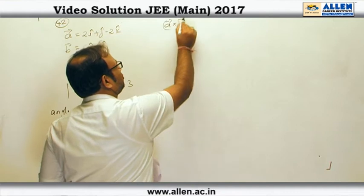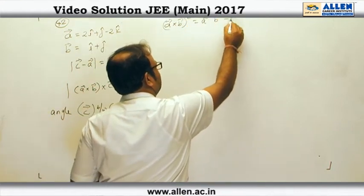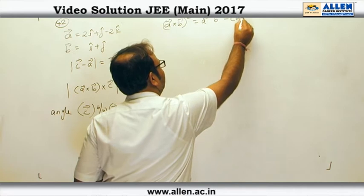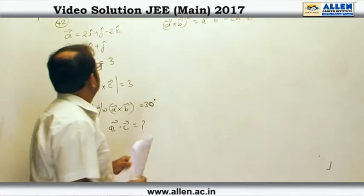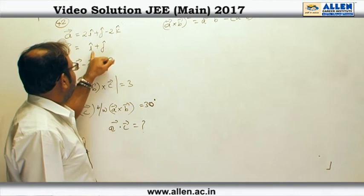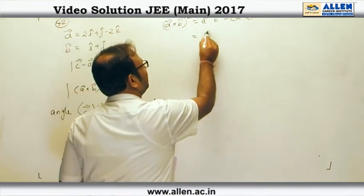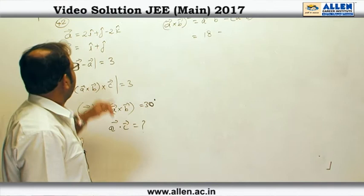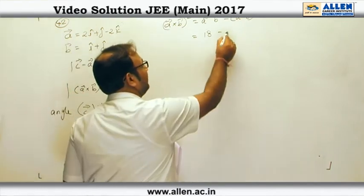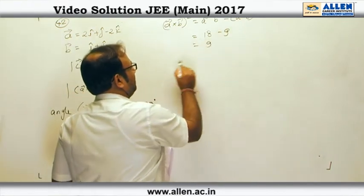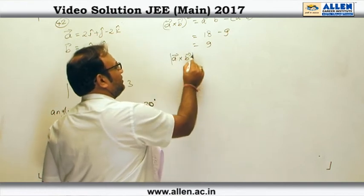Lagrange's identity states: |A×B|² = A²·B² - (A·B)². Now A² is 9 and B² is 2, so that makes it 18 minus (A·B)², where A·B is 3, so that makes it 18 - 9 = 9. Therefore, |A×B| = 3.